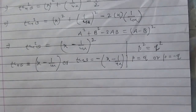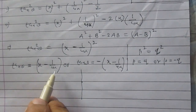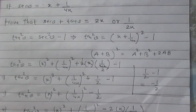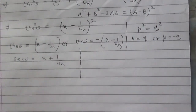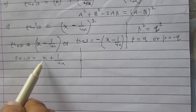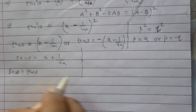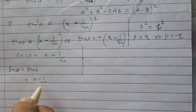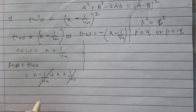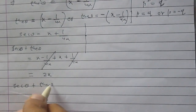Considering the two results one by one: in the first case, tan θ equals x minus 1 upon 4x, and sec θ equals x plus 1 upon 4x as given. So sec θ plus tan θ equals x plus 1 upon 4x plus x minus 1 upon 4x. The terms 1 upon 4x and minus 1 upon 4x cancel, giving a result of 2x. Thus in the first case, sec θ plus tan θ equals 2x.